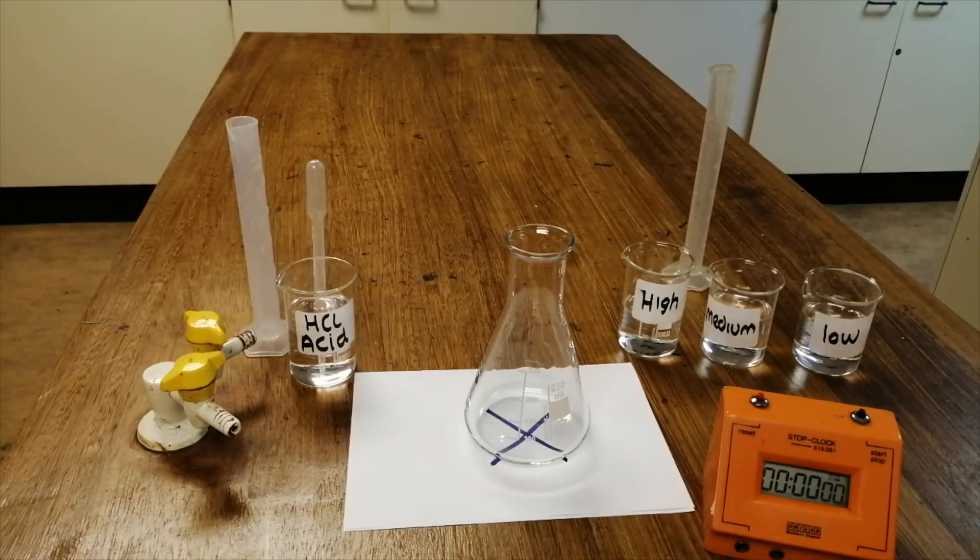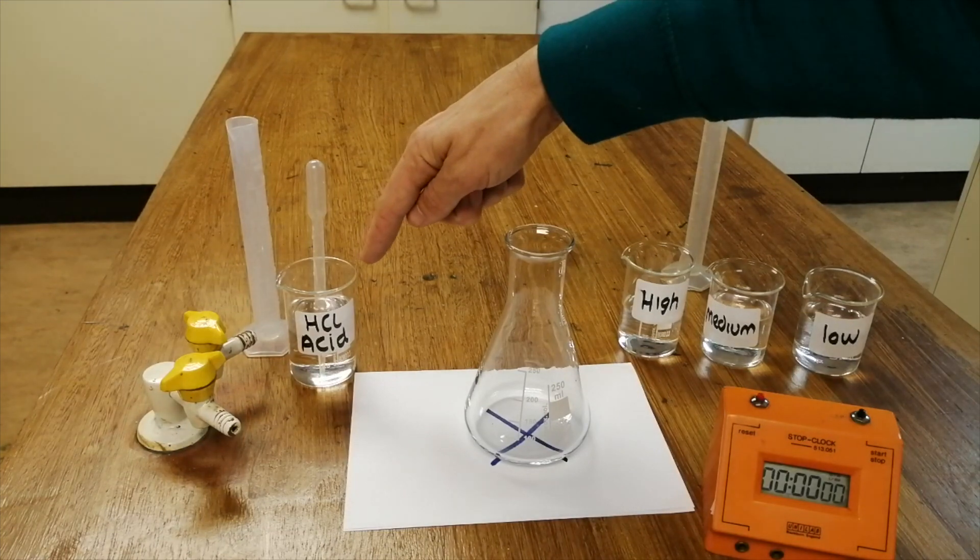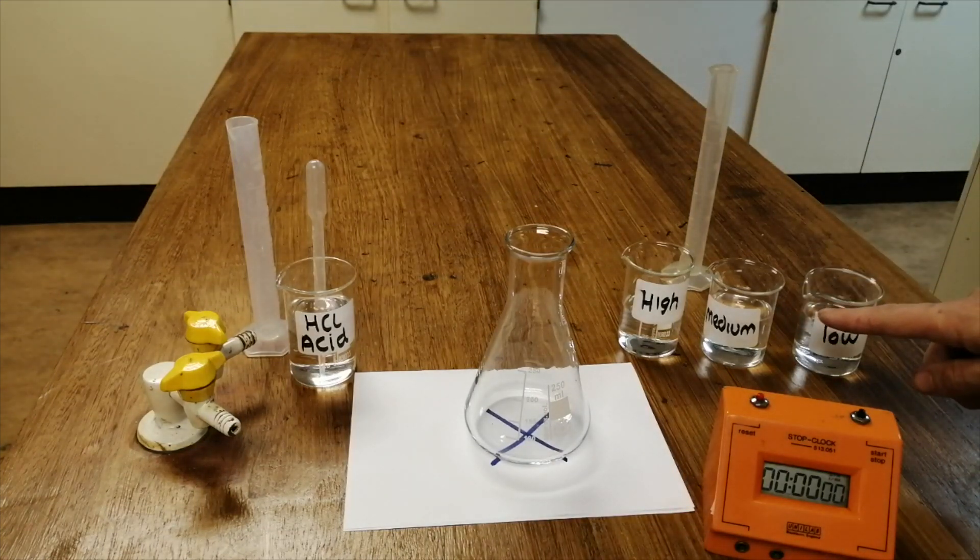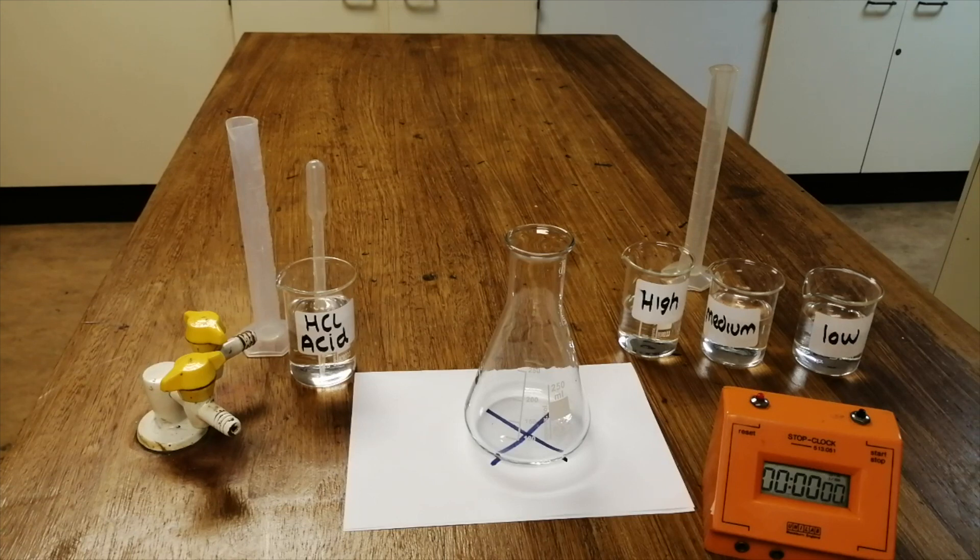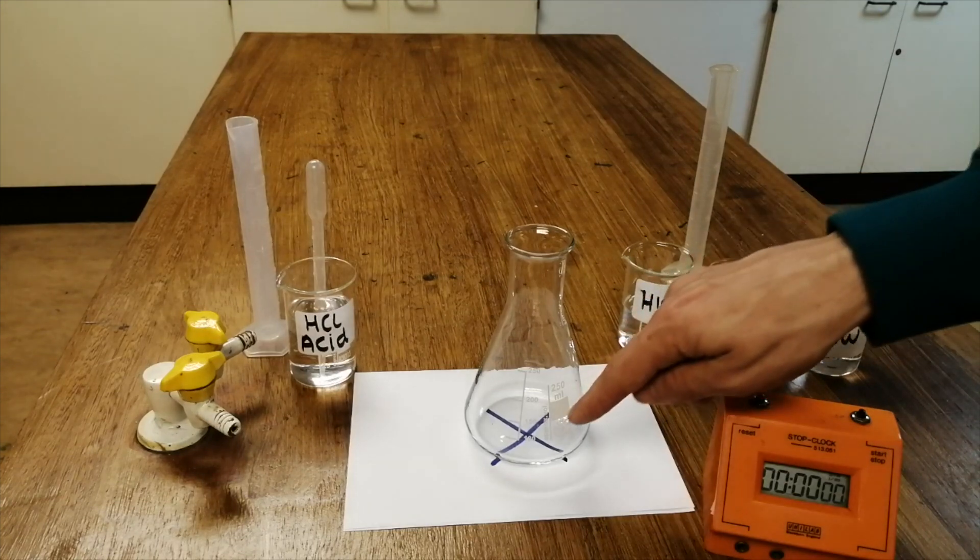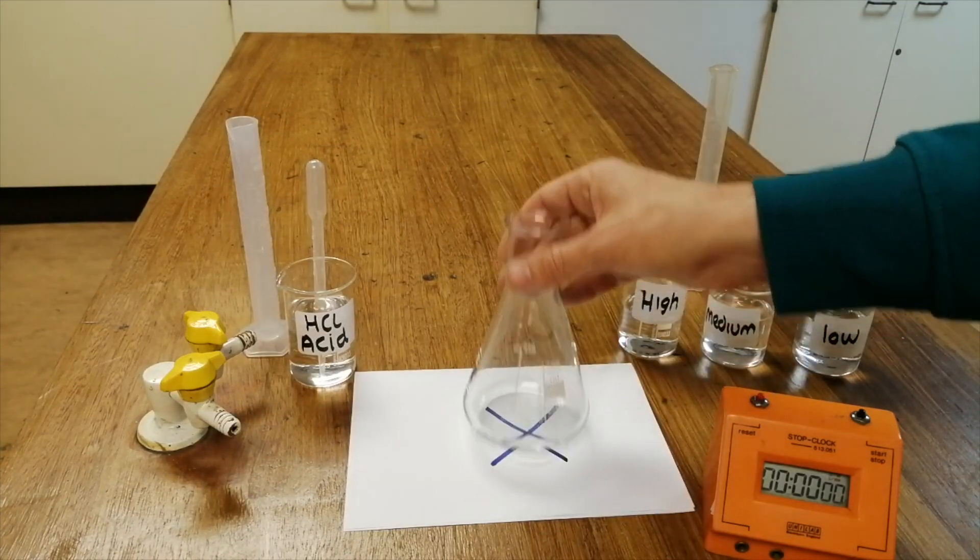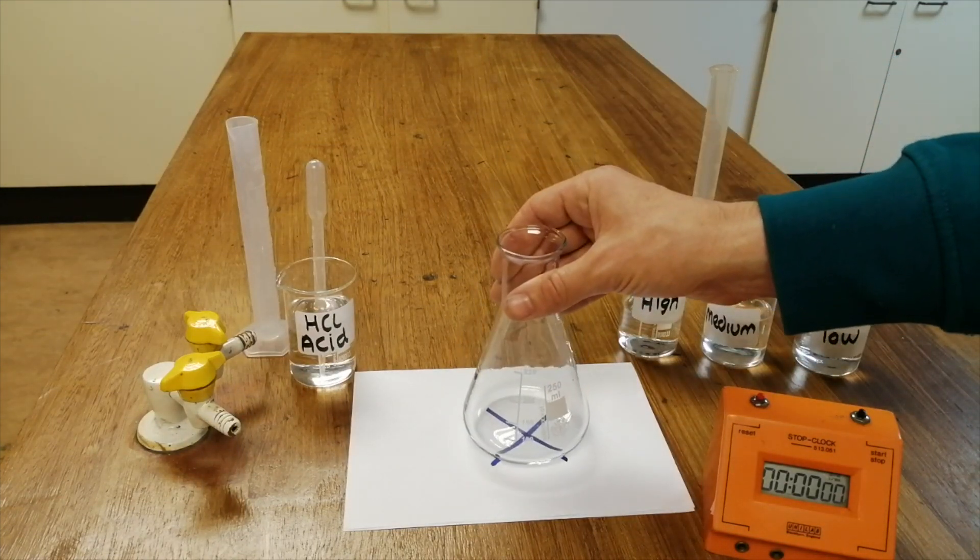In this experiment, I will be adding hydrochloric acid to sodium thiosulfate and the mixture will react and turn cloudy. I'm going to time how long it takes for the mixture to turn cloudy enough that you can't see the cross underneath the conical flask.